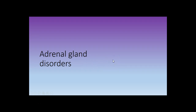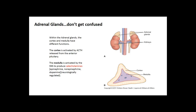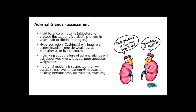Adrenal gland disorders — the adrenal glands sit on top of the kidneys. The cortex, the outer portion, is activated by ACTH from the anterior pituitary. The medulla is stimulated by the sympathetic nervous system to produce catecholamines — epinephrine, norepinephrine, and dopamine — so this part of the endocrine system is actually neurologically regulated. The roles of the adrenal glands include fluid balance and fight-or-flight stress responses. Different areas being affected will produce different symptoms.